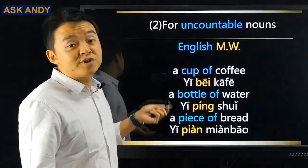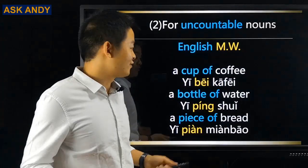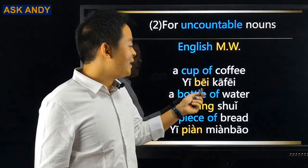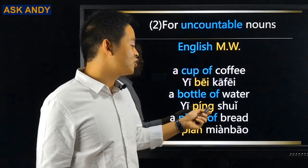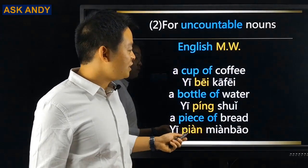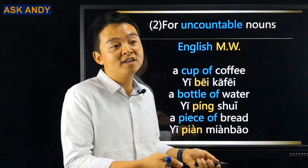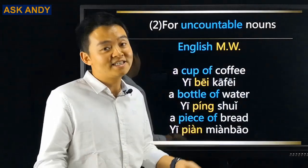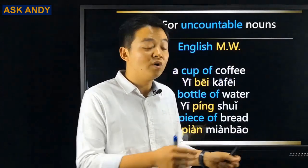For uncountable nouns, you can just think about English measure words. A cup of coffee becomes 一杯咖啡. A bottle of water becomes 一瓶水. A piece of bread becomes 一片面包. Think about it in English first — if it's a countable noun use 个, if it's uncountable think of the English measure word and use the Chinese equivalent. Remember this trick is just for speaking, not for listening and reading.